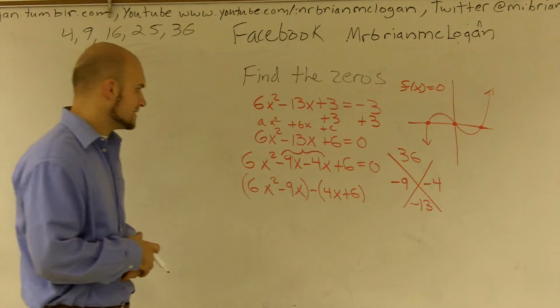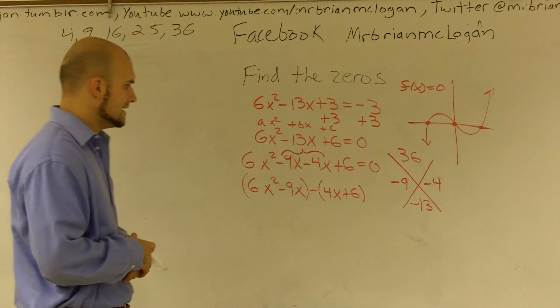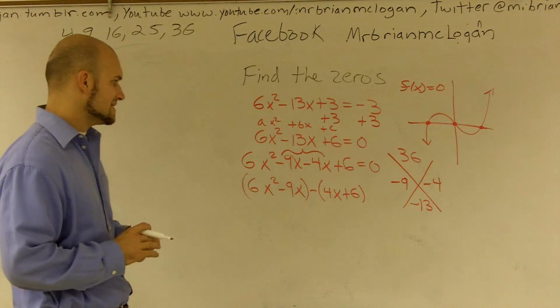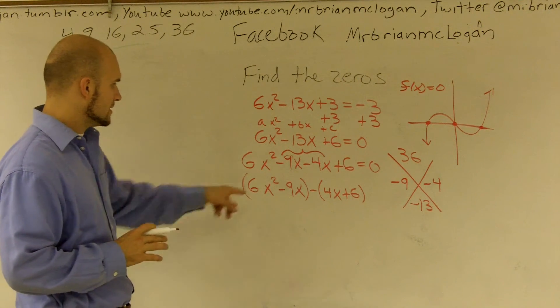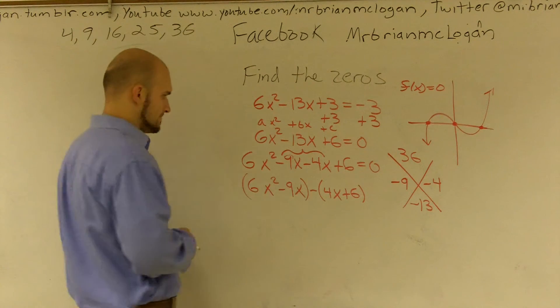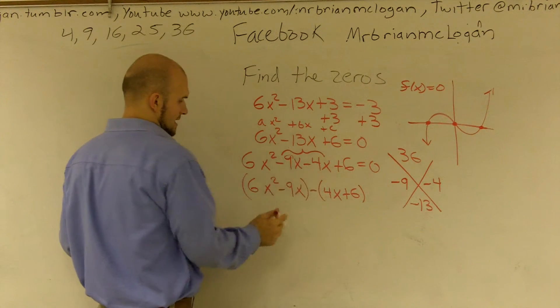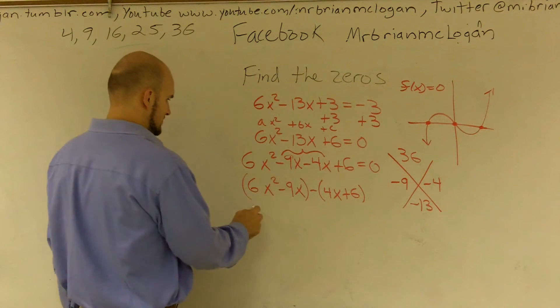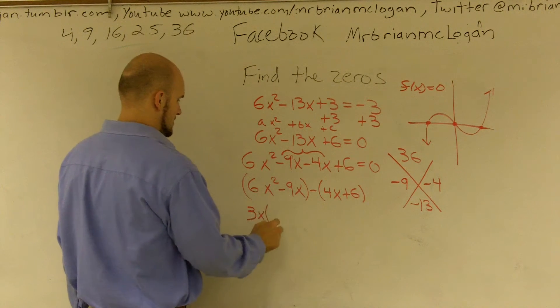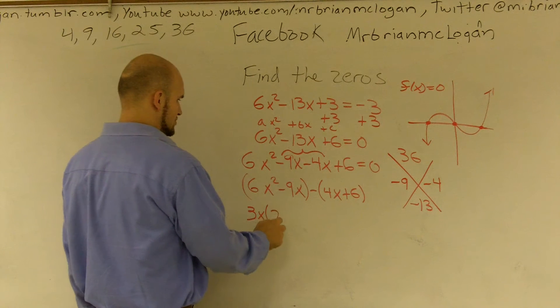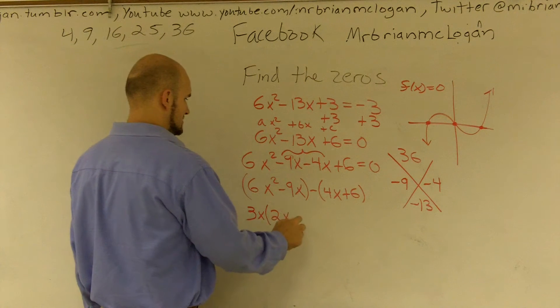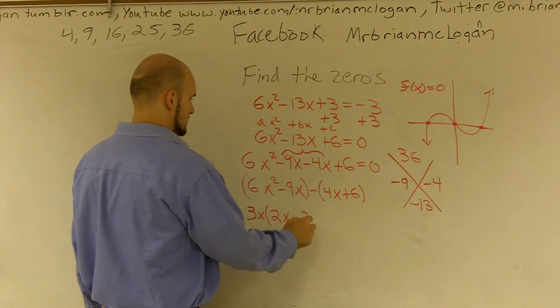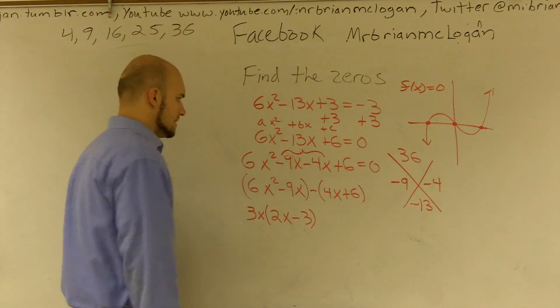Alright, so then what I need to do is I need to look at what can I take out. And here, what I'm going to want to do is I'm going to want to take out a - let's take out a 3, actually, yeah, let's take out a 3x. So if I take out a 3x, I'll be left with a 2x minus 3.